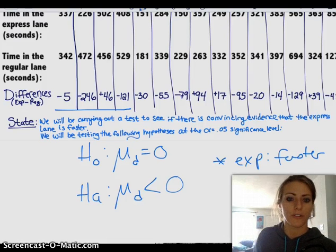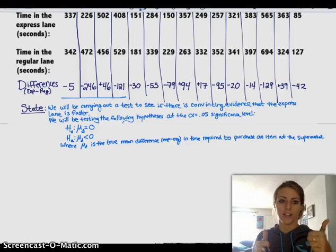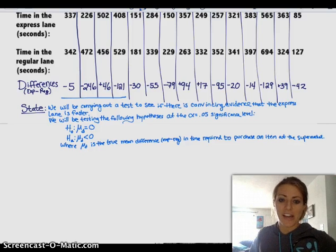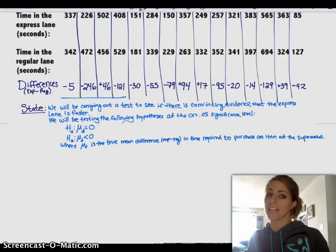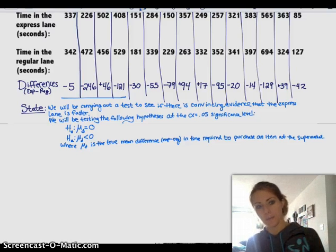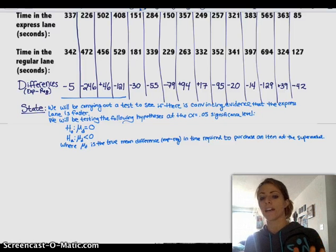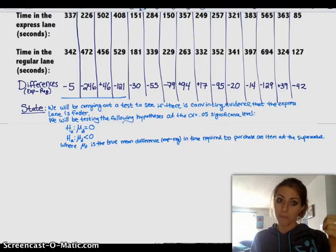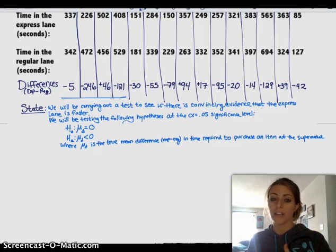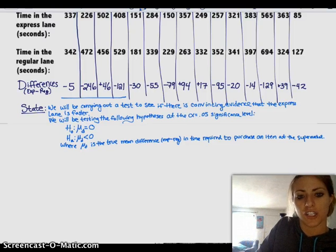So that's our state all ready to go. Now we can move on to planning — we need to check our conditions: random, normal, independent. Random: yes, we got it because we flipped a coin for who went in what lane, and the times that were selected were random. So everything's good on that condition.